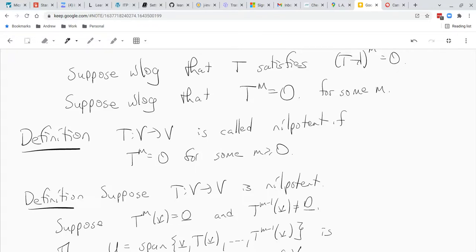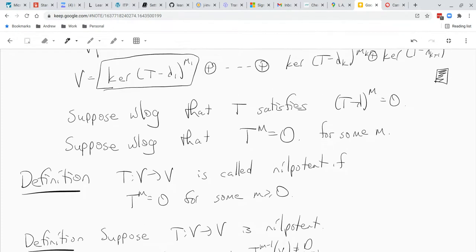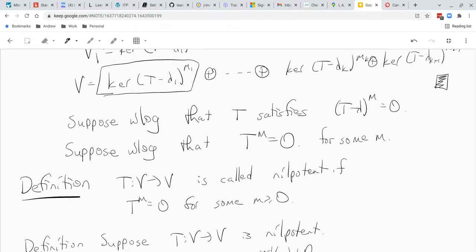Okay, hi guys. So in the last video we saw that we're breaking V up into subspaces where t minus lambda, like in this subspace, t minus lambda 1 to the m1 is really 0. So we might as well just work on that subspace alone.